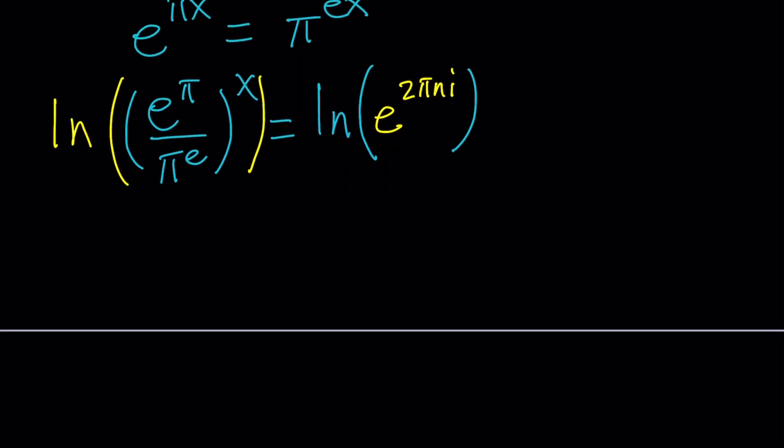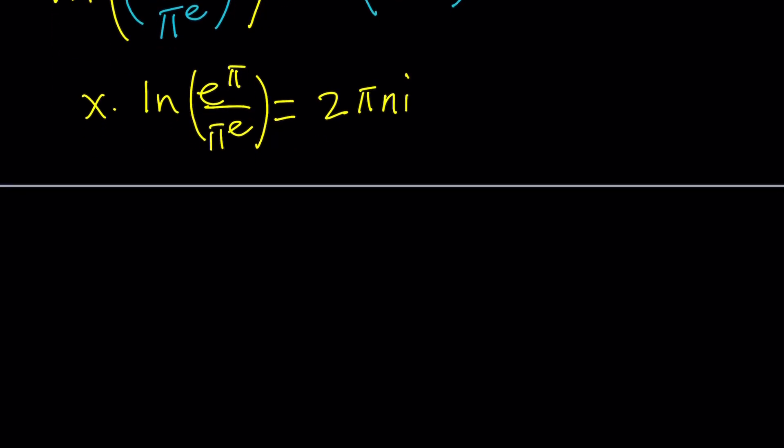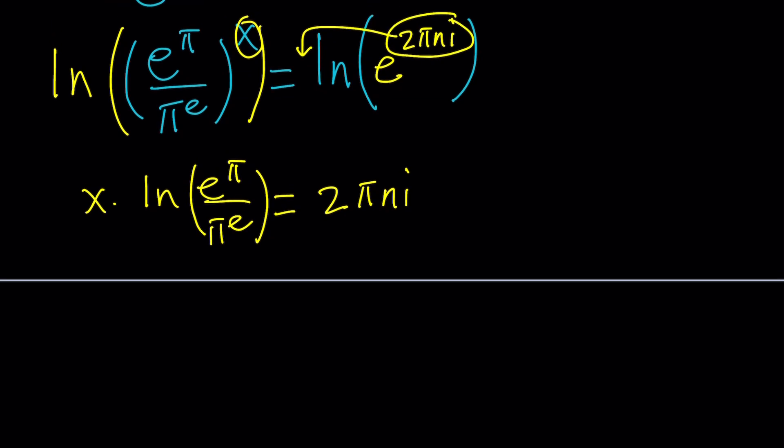So, we're going to get the following. X is going to be moved to the front. X times ln e to the pi over pi to the e equals. Now, this can be moved to the front using properties of logarithms. ln e equals 1. So, we can write it as 2 pi n i. And n is an integer, by the way. I forgot to say, but hopefully you guessed it.